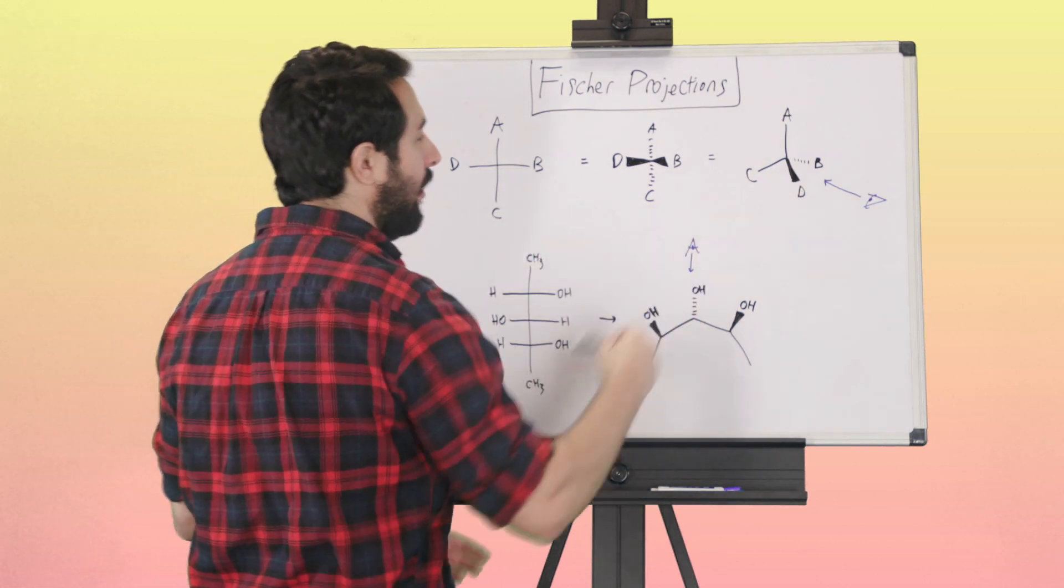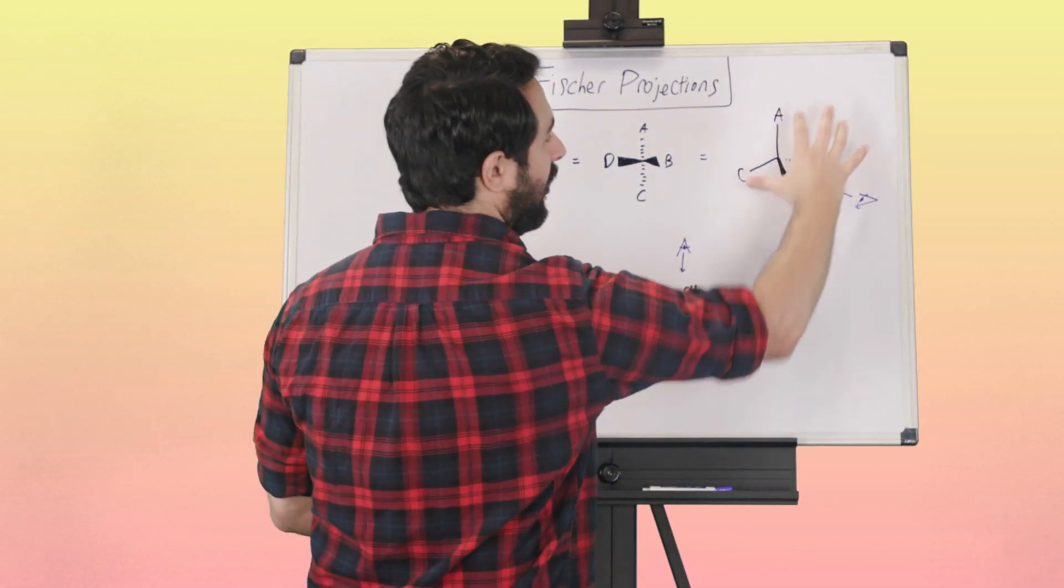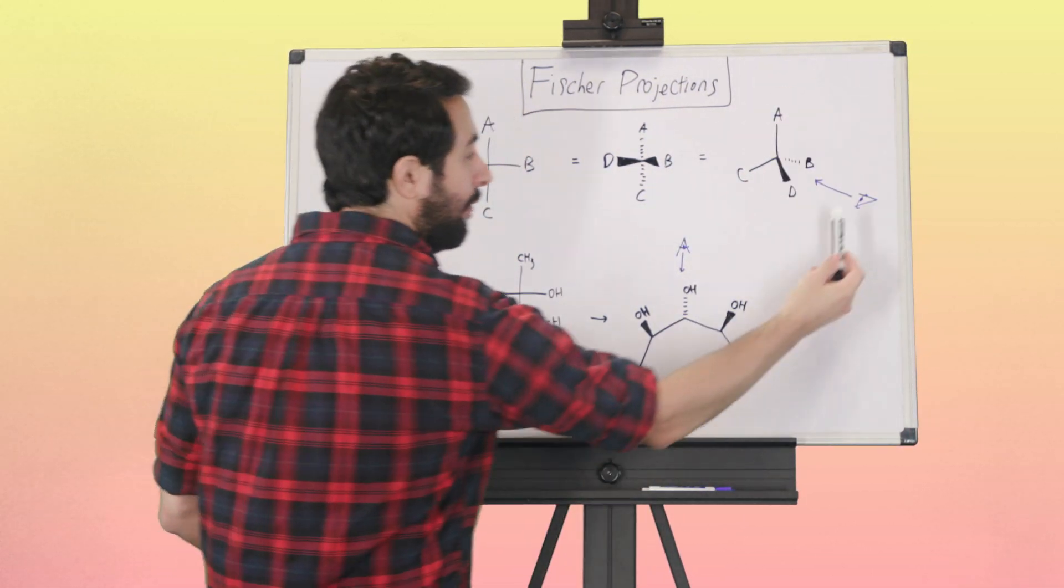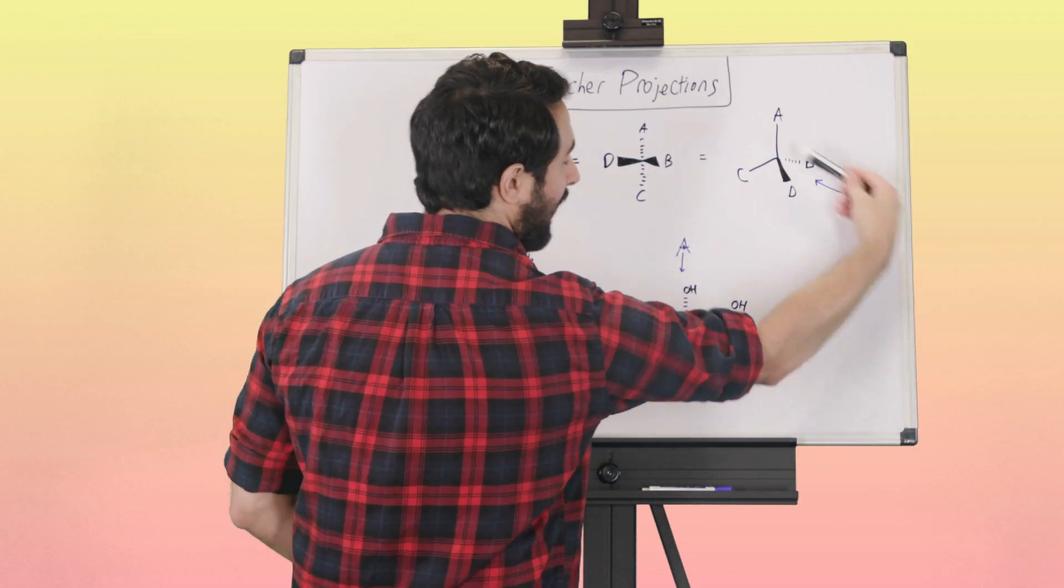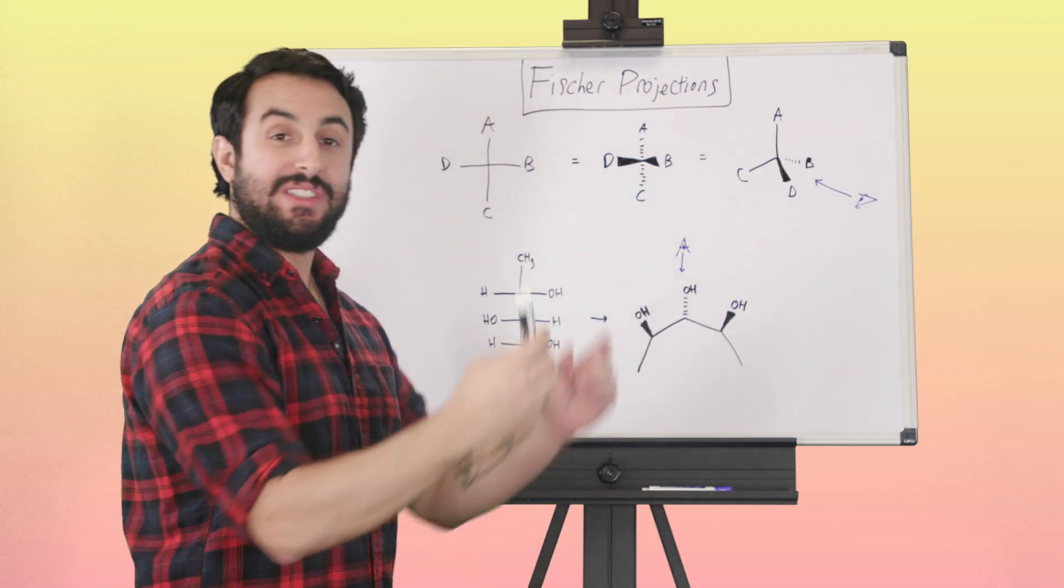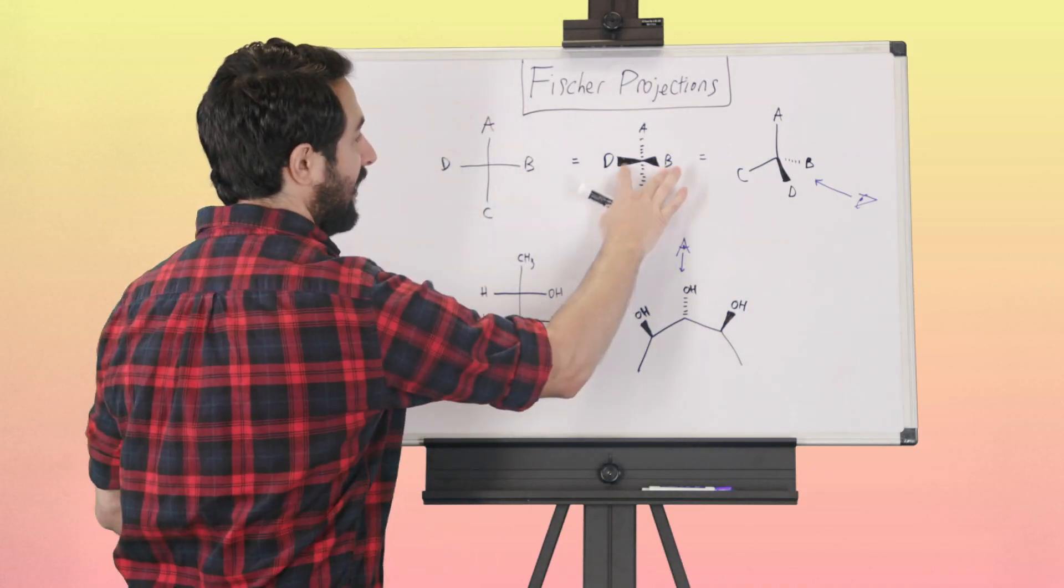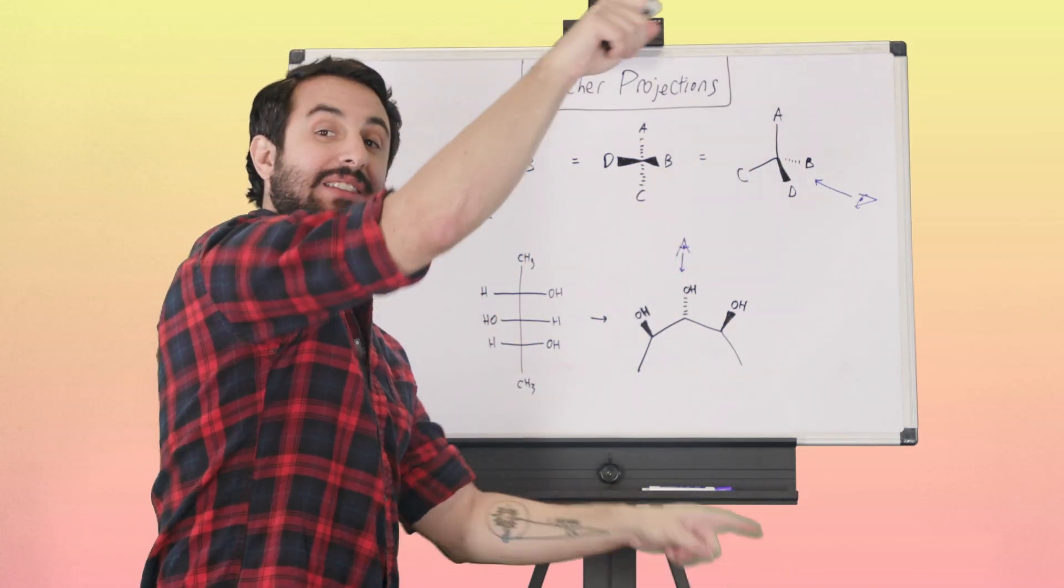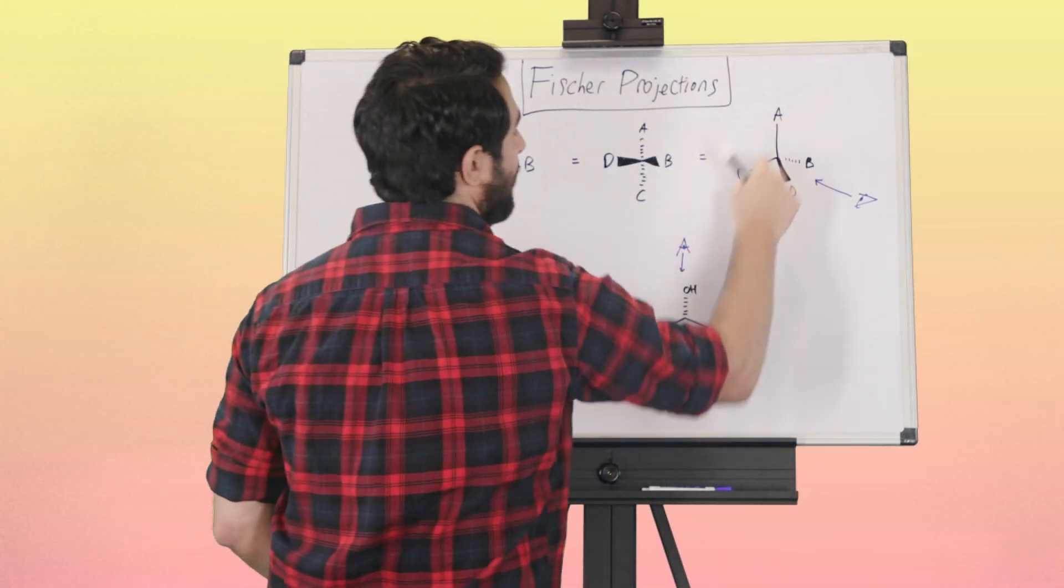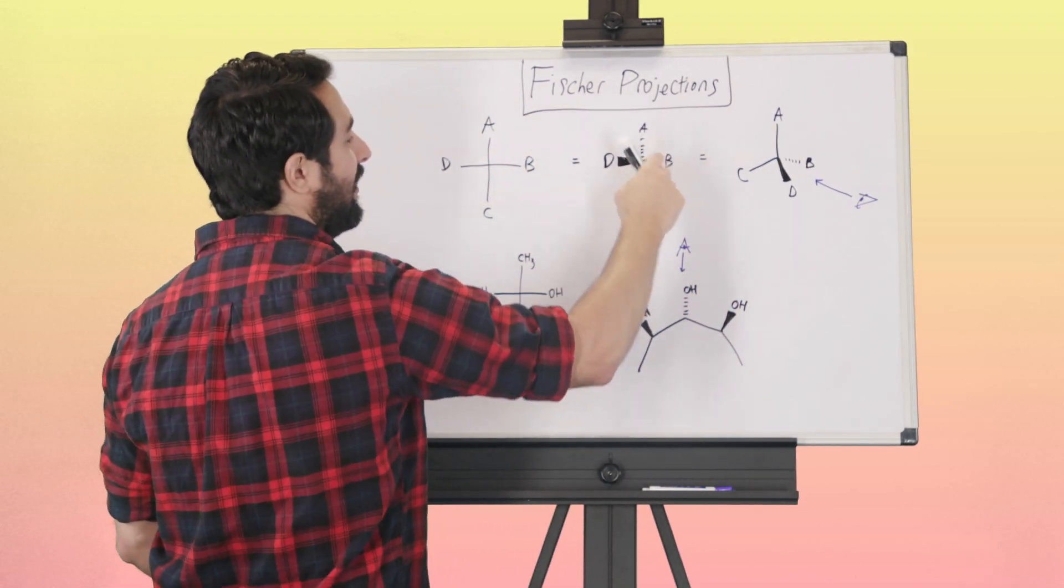We can envision it this way though: imagine this is the molecule we're talking about, and imagine you're in plane right here looking at it this way. You would see D and B coming towards you like this, and you would see A and C going away like this.